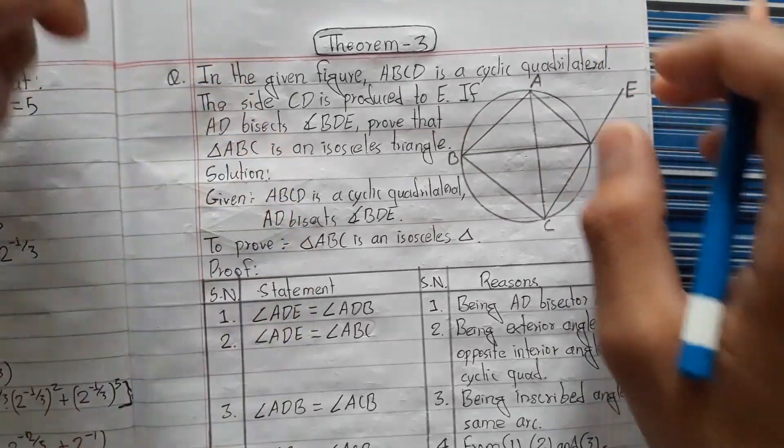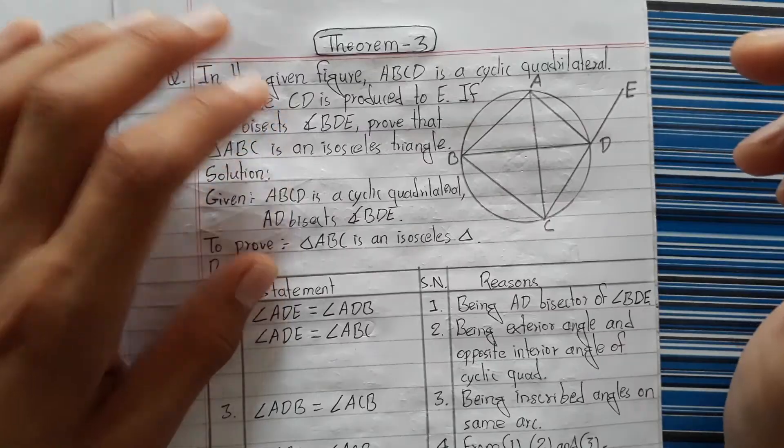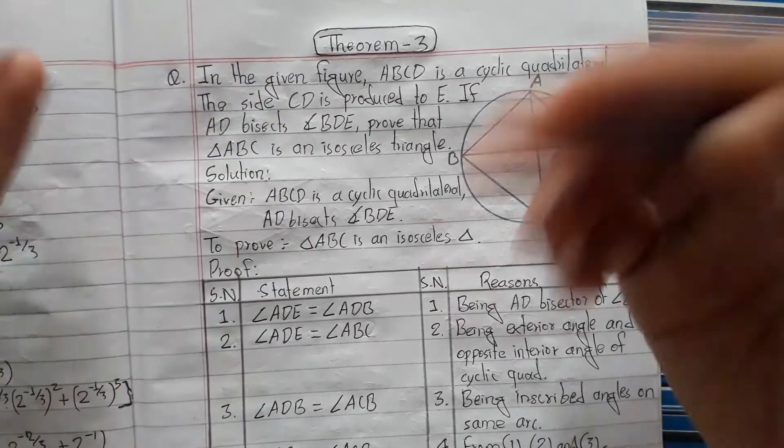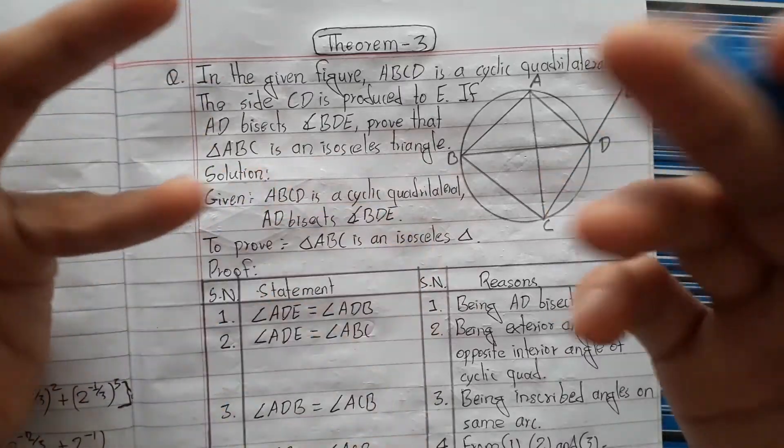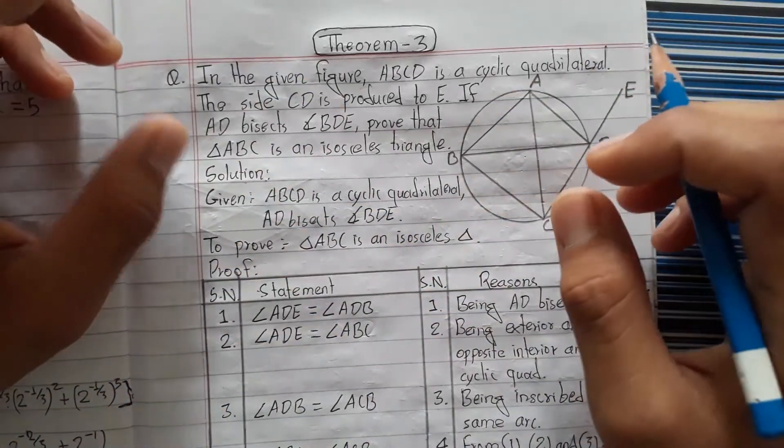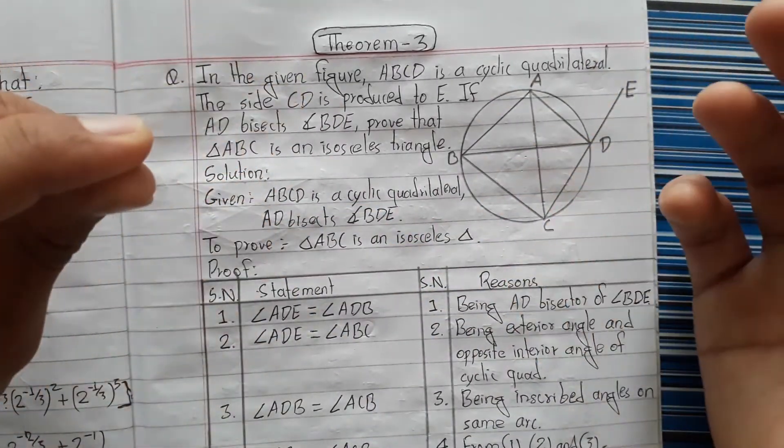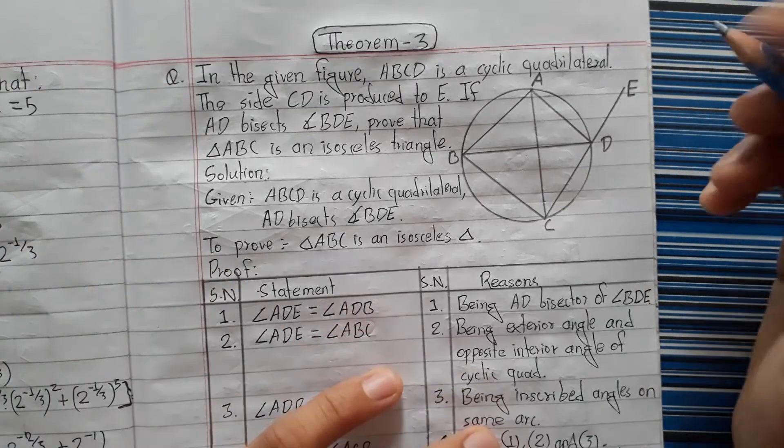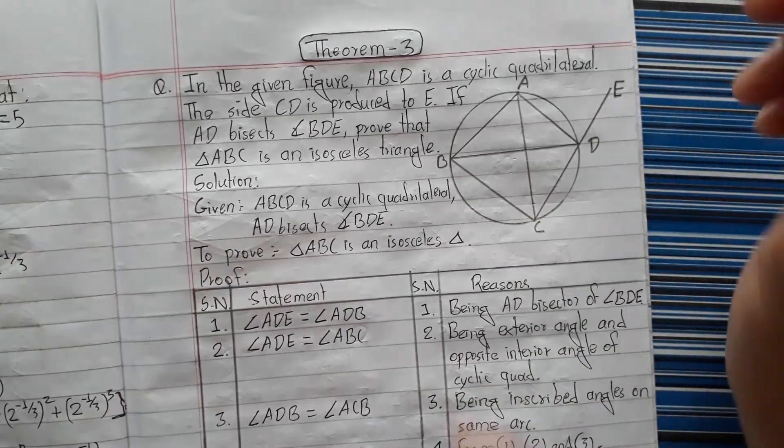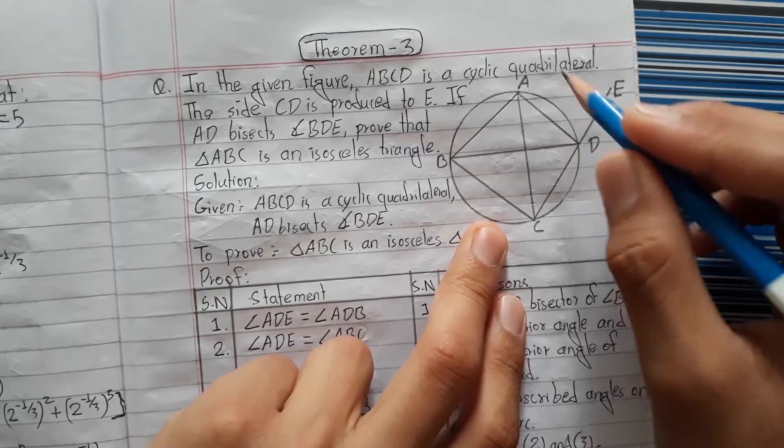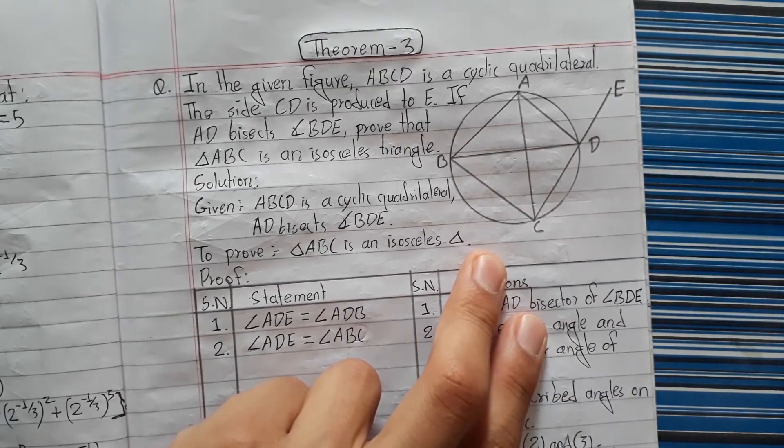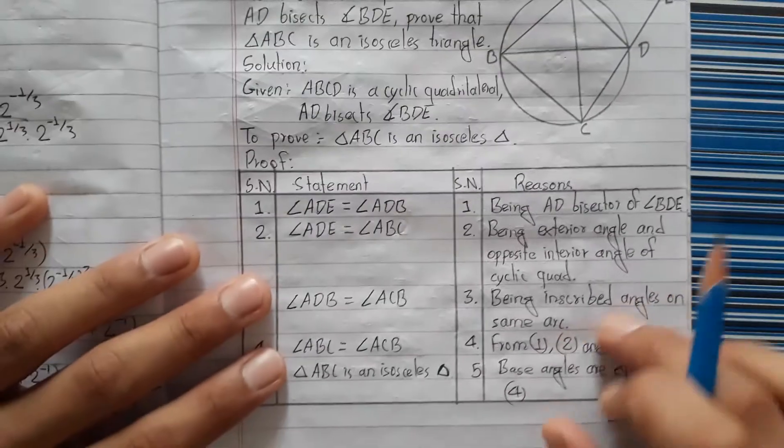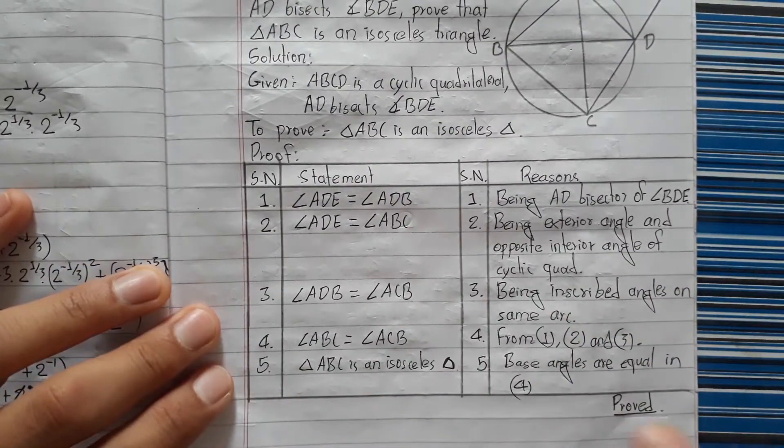Today we'll discuss the equation for a cyclic quadrilateral. The sides and angles of the cyclic quadrilateral - this is the equation we need to prove. In the given figure, there's a circle with a cyclic quadrilateral. I'll show you the question and figure, then we'll solve it together in the next few seconds.